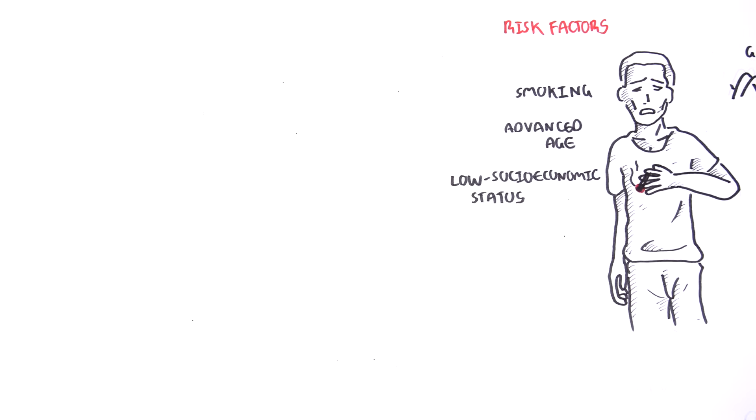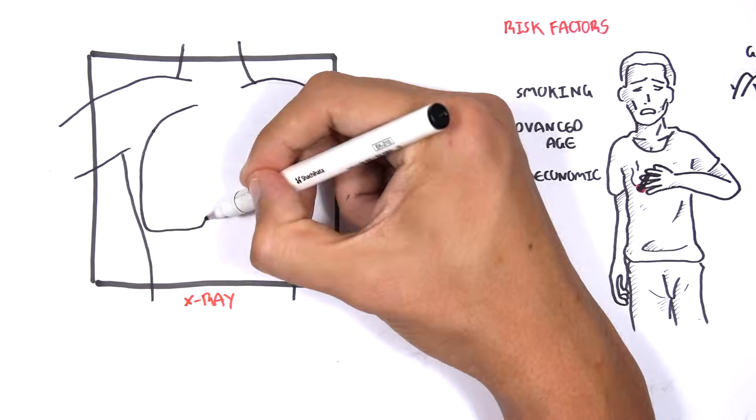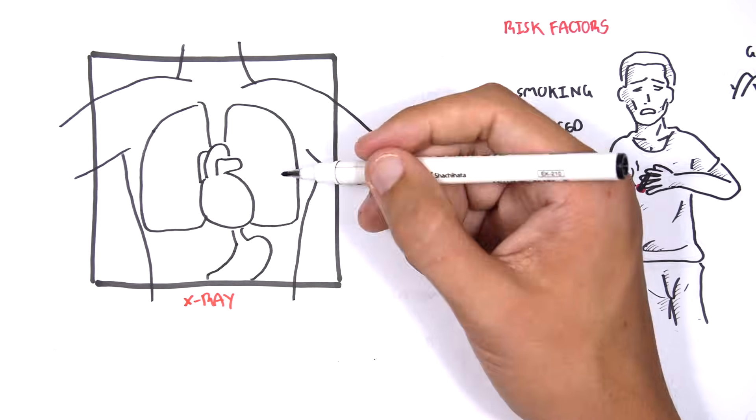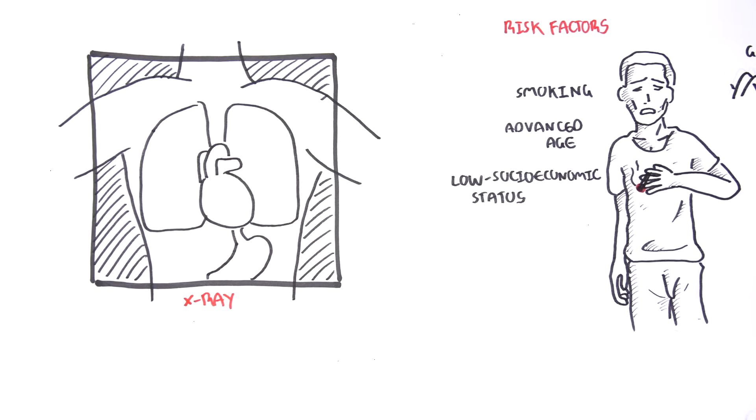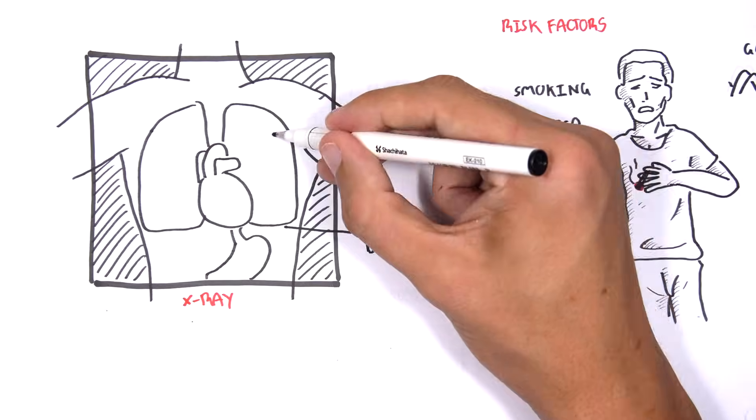Investigations that should be performed in a suspected person with COPD include a chest x-ray, where findings can include a flattened diaphragm and hyperinflation.